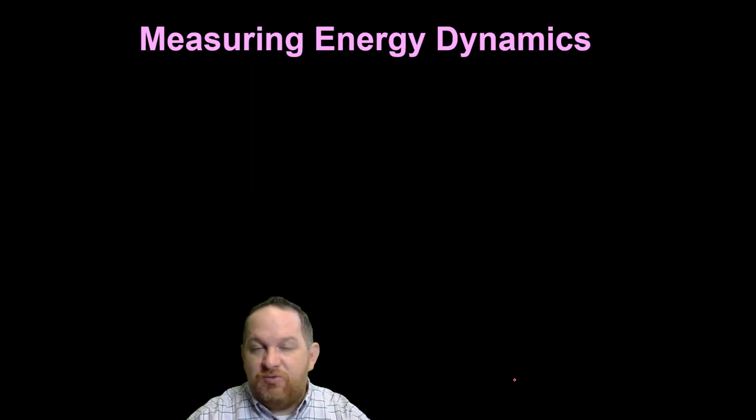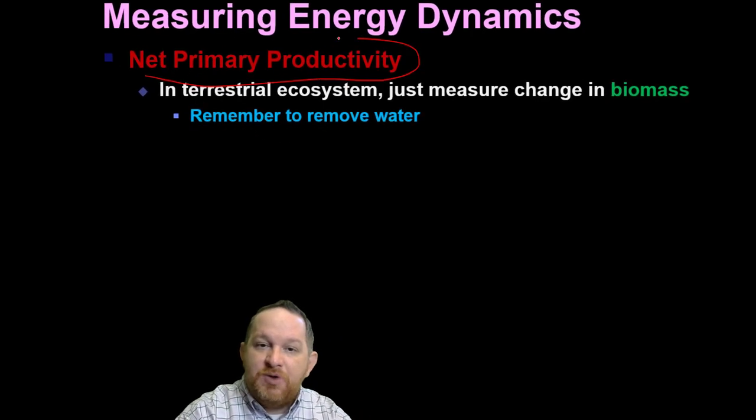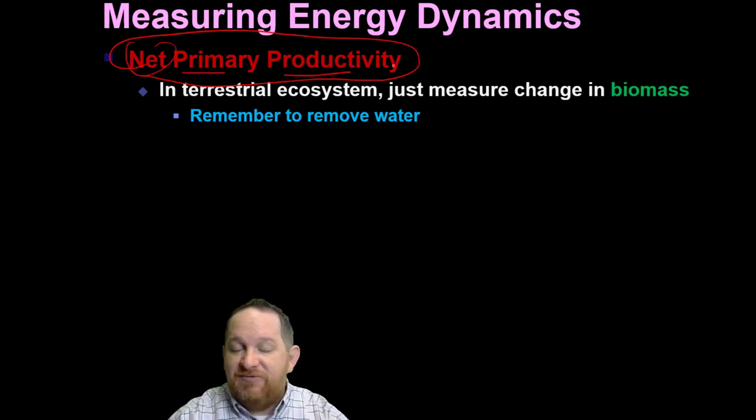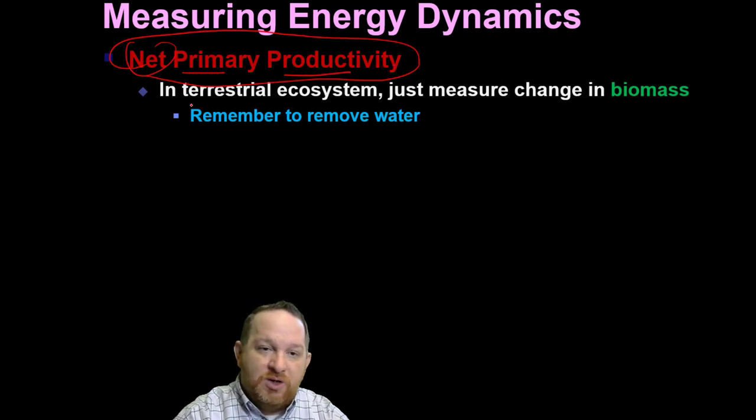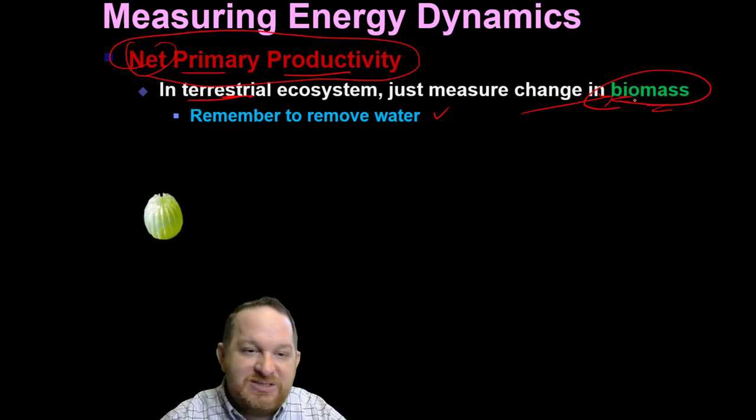How could we measure this? We can actually do a lab. We can measure the net primary productivity, the net change in productivity for a different ecosystem. In a terrestrial one, one on land, we could just measure the change in biomass - the mass of living things. One important thing you got to remember when you're doing these problems or if you were going to do a lab, you've got to remember to remove water from the biomass because that's not technically living material.